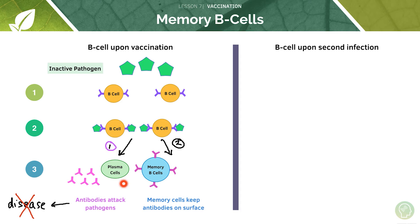Option number two is the production of memory B cells, which keep the specific antibodies to this inactive pathogen on their surface. These end up circulating in the blood — for life.